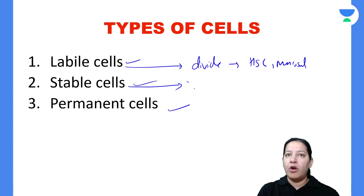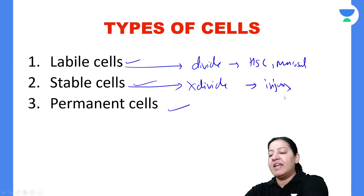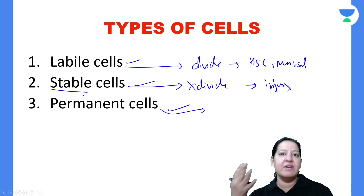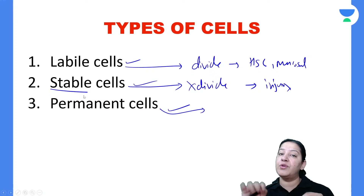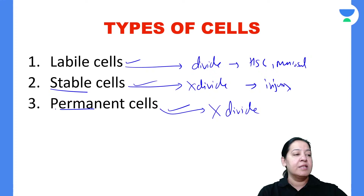Labile cells constantly divide — for example, hematopoietic stem cells of the bone marrow, mucosal cells, and epidermal cells of the skin. Stable cells, in postnatal adult life, do not normally divide, but they have the ability to divide if injury occurs. The stimulus is the injury — if the cell receives injury, it can enter the cell cycle and undergo cell division.